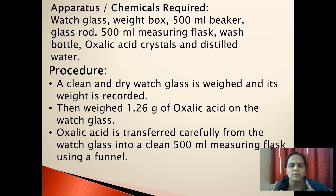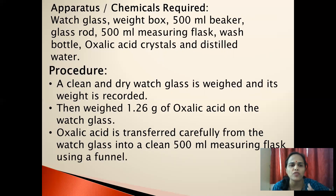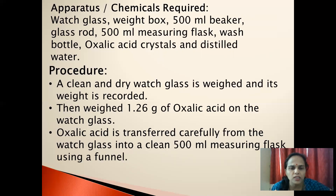After apparatus and chemicals required, you will write the procedure point-wise. The first point: a clean and dry watch glass is weighed and its weight is recorded. Then weigh 1.26 grams of oxalic acid on the watch glass.